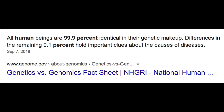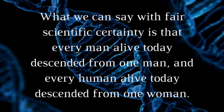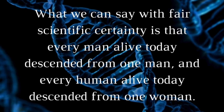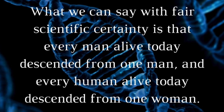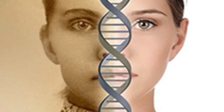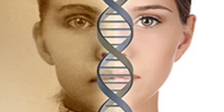Gene sequencing has shown that humans are nearly all identical to one another, no matter how far back you go in time. It doesn't matter if you're looking at Neanderthal or Denisovan, or where in the world you go to test people alive today — we are all related. Contrary to what evolution predicted and taught to the public.